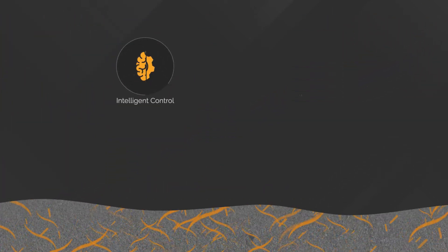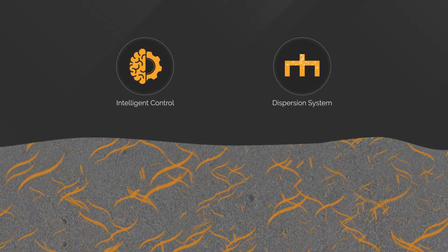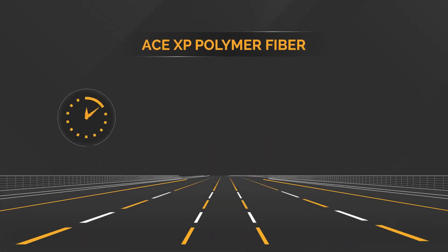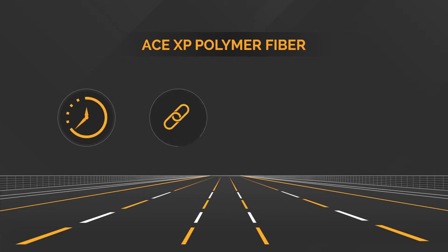With an efficient binder system that ensures optimal distribution, ACE XP Polymer Fiber boasts longer life expectancy, higher strength, superior resistance to rutting and cracking, and the potential for reduced asphalt thickness.